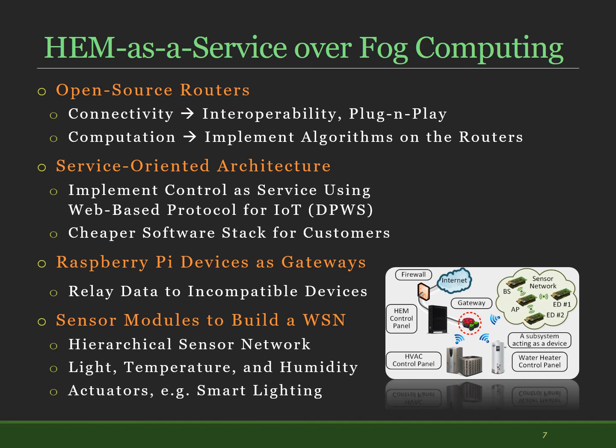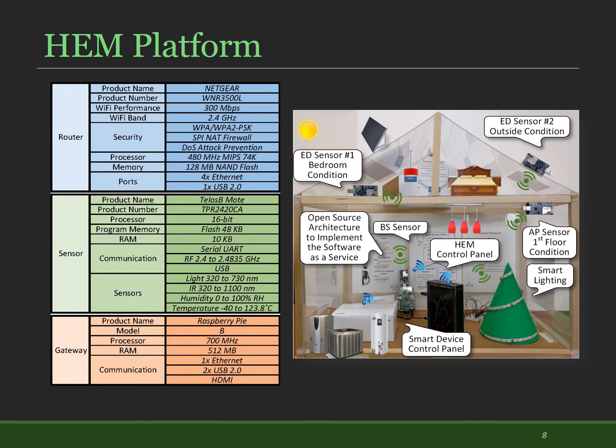A wireless sensor network is implemented using multiple sensor modules called Telos-b nodes. These sensors are connected together to form a hierarchical sensor network. They provide light, temperature, and humidity sensing, and are also used as remote actuators — for example, in smart lighting. Here you can see a list of hardware used for the HEM platform. As you can see, they are easy-to-buy off-the-shelf products that are easy to deploy.